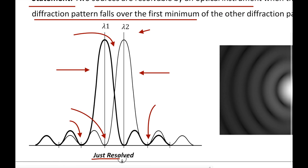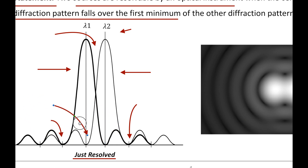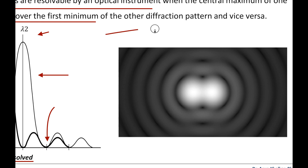If the difference in wavelengths is such that their principal maxima are separately visible, then there is a distinct point of zero intensity between these two wavelengths. The principal maxima of lambda 1 lies on the first minima of lambda 2 and vice versa, as shown in this diagram. Hence, according to Rayleigh's criterion, they are said to be just resolved. The corresponding intensity distribution pattern is shown here. Such a condition is called the Rayleigh's criterion of resolution.